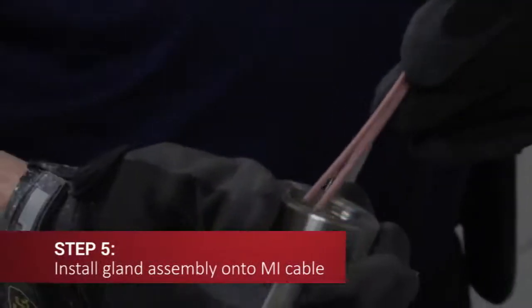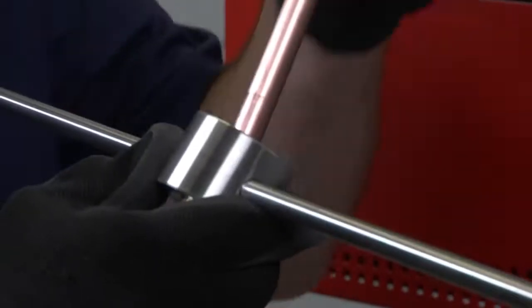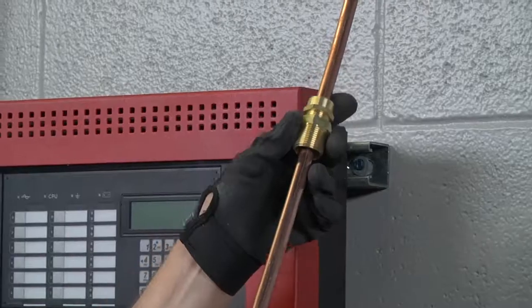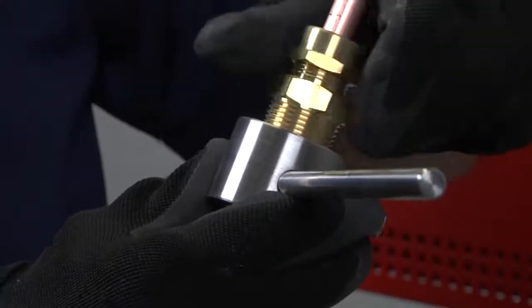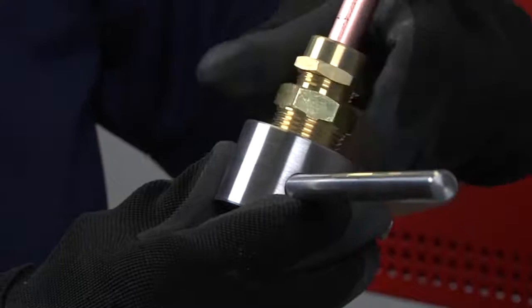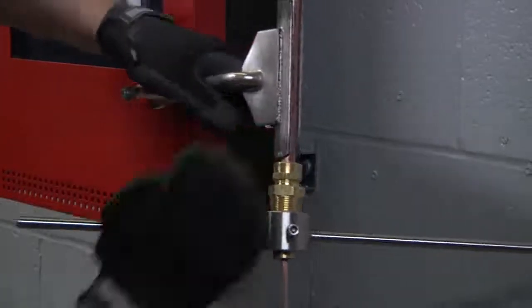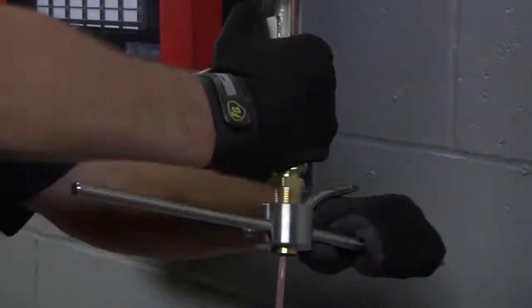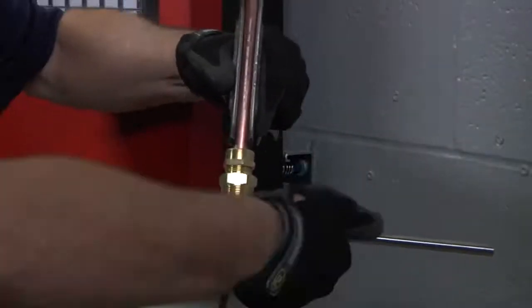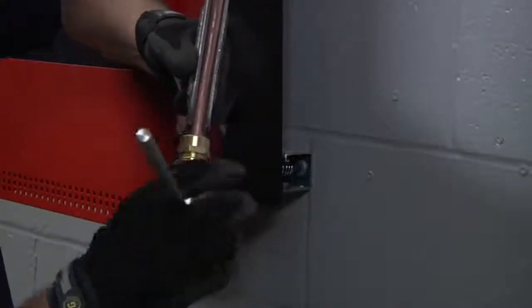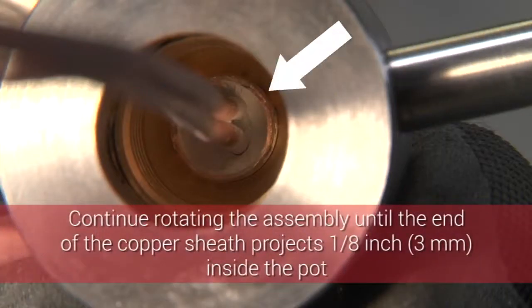Slide the assembly over the exposed conductors, threaded end of PyroPotter first, until it stops at the face of the cable. Screw the gland assembly already on the cable all the way into the threaded end of the PyroPotter tool and tighten it lightly with your fingers. Now turn the PyroPotter in a clockwise direction while simultaneously applying pressure. This will engage the internal screw thread of the pot onto the sheath of the MI cable. Continue rotating the assembly until the end of the copper sheath projects one eighth of an inch, three millimeters, inside the pot.